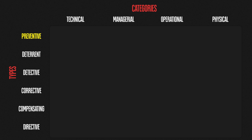Examples of preventative controls across categories: technical — firewalls and endpoint protection software that block malicious activity; managerial — a strict password policy to prevent password-related attacks; operational — security awareness training to help users spot phishing emails; and physical — locks and access control systems to prevent unauthorized entry to the office building.